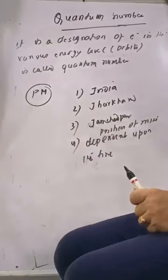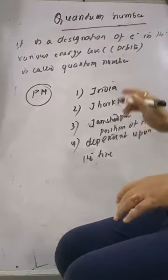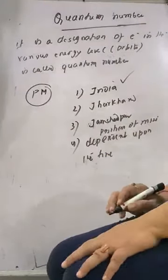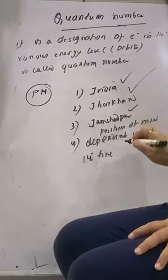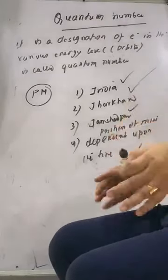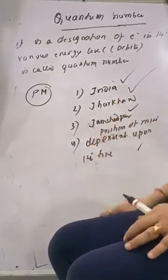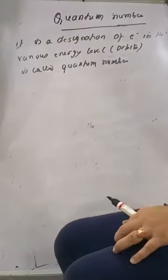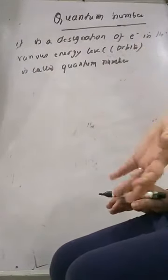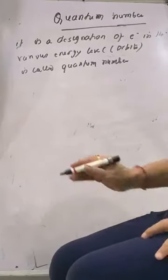This all four are correlated to me and correlated to quantum numbers. So that means you have understood or not. Means I have to be found out in India, then I have to be found out in Jharkhand, then in Jamshedpur, then in position. So so many things are still done. So that is why quantum numbers are divided into four parts over here. So designation, what do you mean? That is position of electrons in the various energy level.